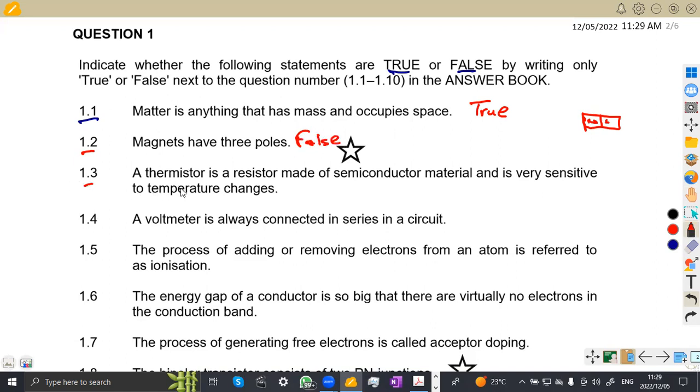1.3. A thermistor is a resistor made of a semiconductor material and is very sensitive to temperature changes. That's true. This is actually true. That's the definition of a thermistor.